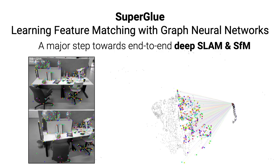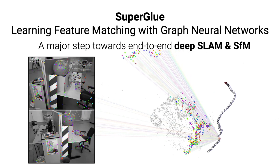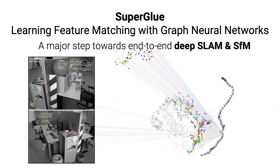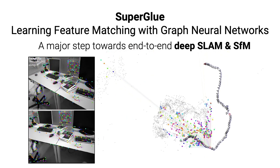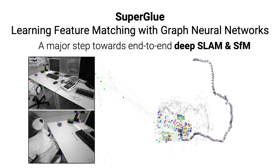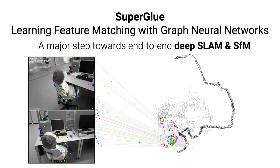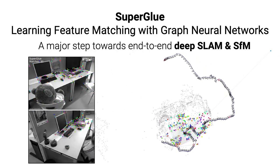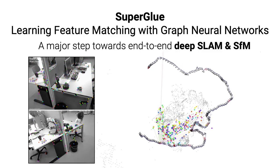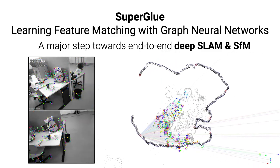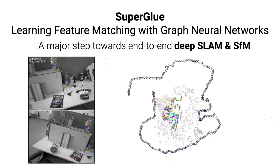SuperGlue generalizes well to different cameras, motions, and environments. We have successfully applied it to indoor monocular SLAM, large-scale 3D reconstruction, and robust day-night localization, setting new state-of-the-art results on multiple datasets. We thus believe that SuperGlue is a major milestone towards end-to-end deep SLAM and structure-from-motion.